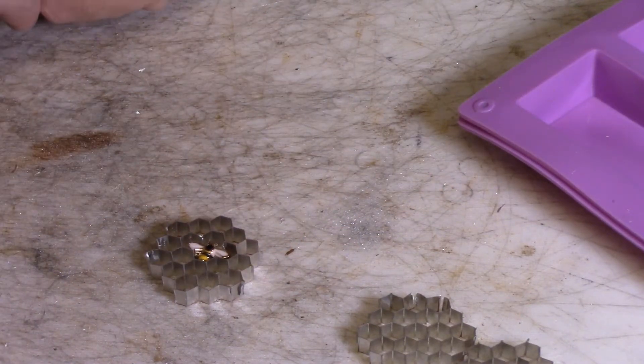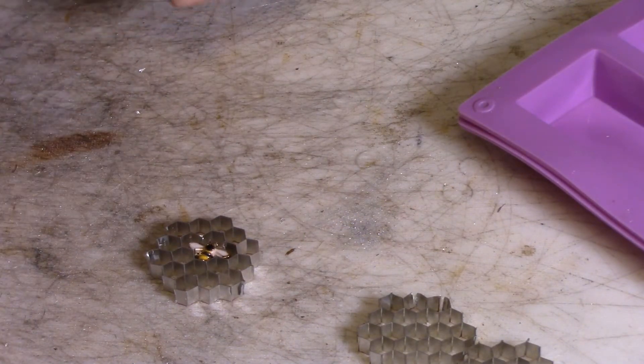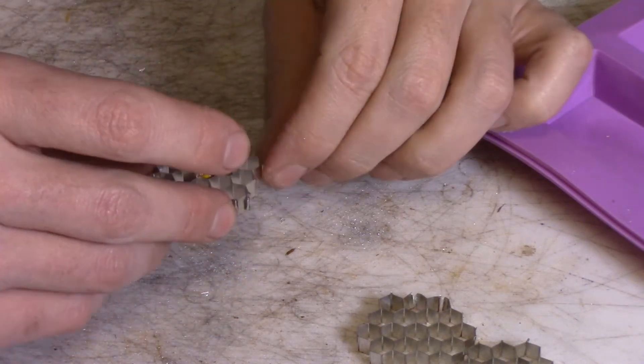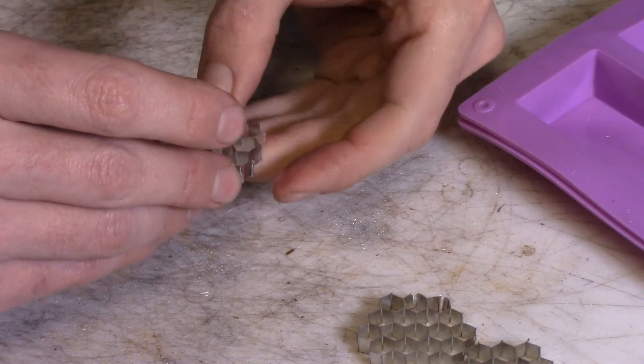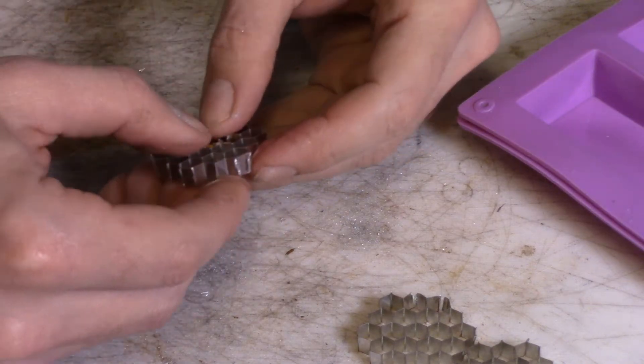There we go. Like I said, a dot of glue to hold it in there and then some resin to fill it all up. Make it look like honeycomb.